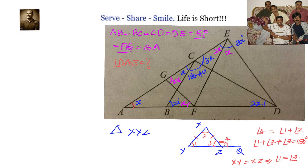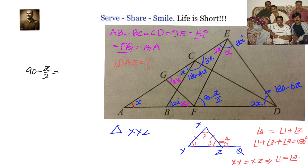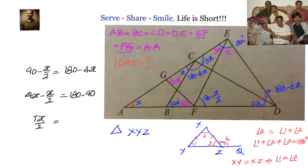Applying the angle sum property to triangle CED with angles 3X, 3X, the remaining angle CDE equals 180 minus 6X, so angle FDE equals 180 minus 4X. In triangle DEF, angle DEF equals X, so angle EFD equals 90 minus X over 2. Since EF equals FG, base angles are equal, meaning angle EFD equals angle EDF. Therefore, 90 minus X/2 equals 180 minus 4X. Simplifying: 4X minus X/2 equals 90, giving 7X/2 equals 90.